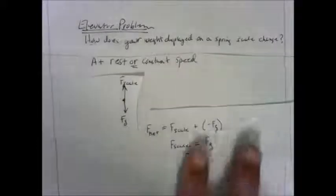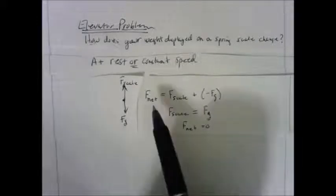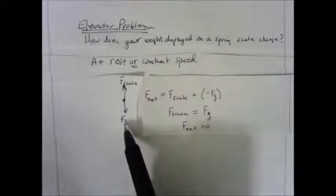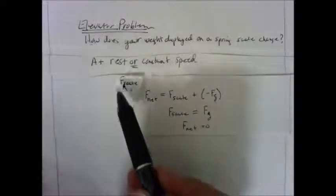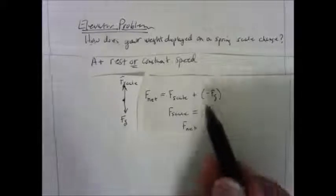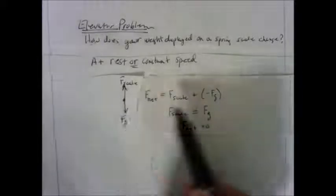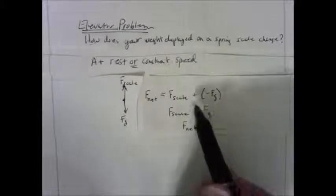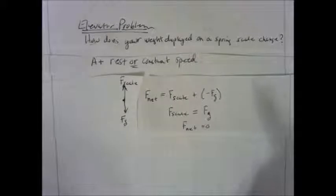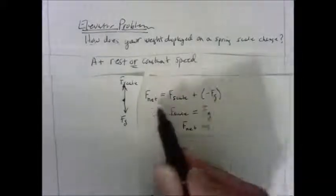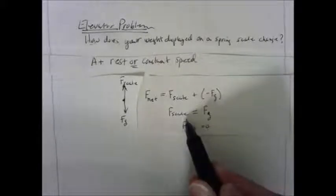What I just said in words, you can write in symbols. F_net equals the vector sum of F_scale and F_G. Remember that if up is positive, F_G is in the negative direction, so you give it a negative value. Since the two vectors are of equal value, F_scale equals F_G, and F_net equals zero. So the equation for this special case is: F_scale minus F_G equals zero, therefore F_scale equals F_G.